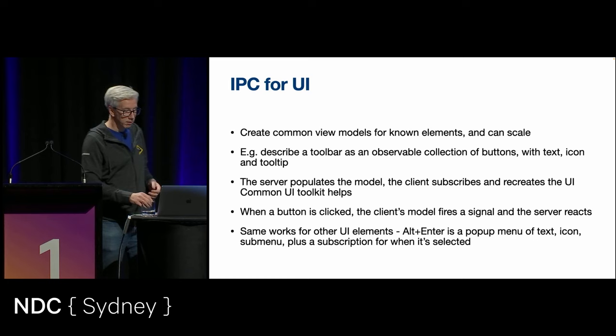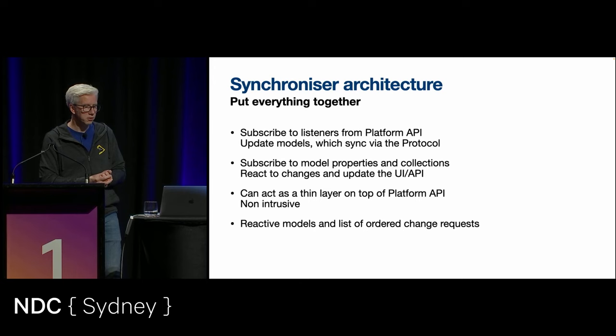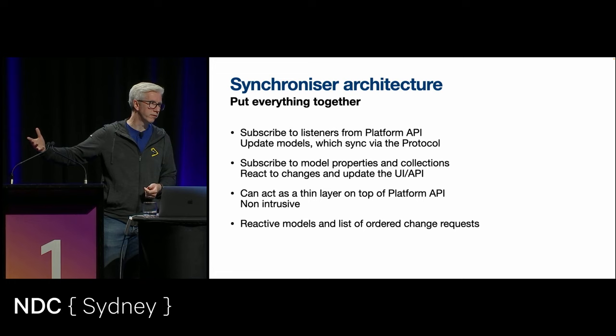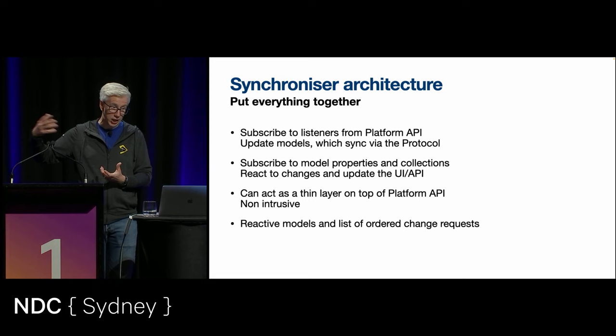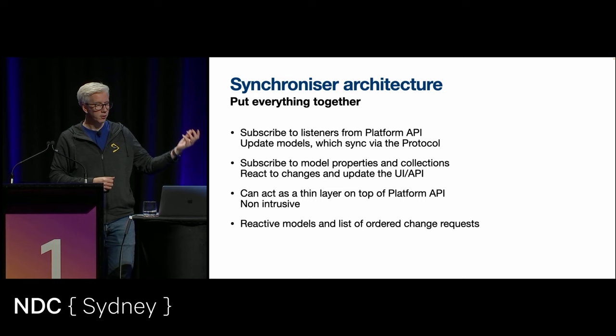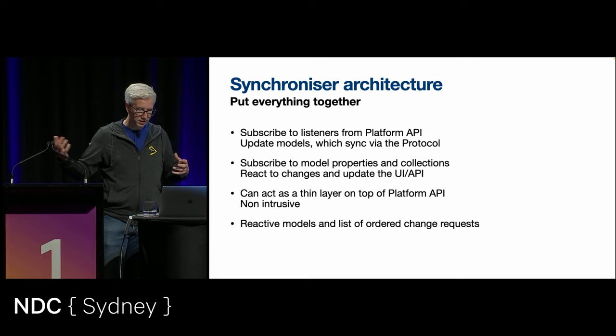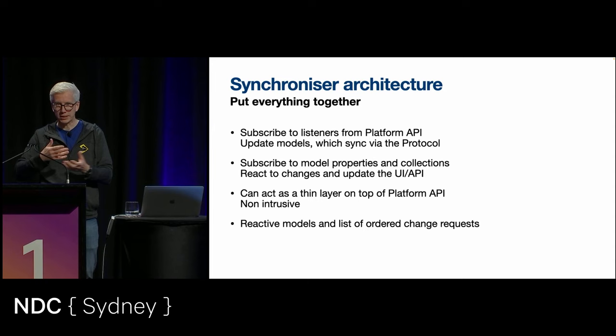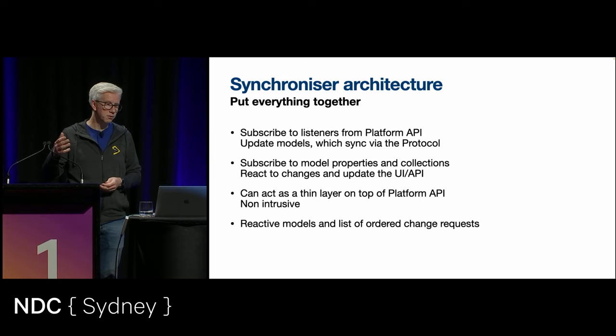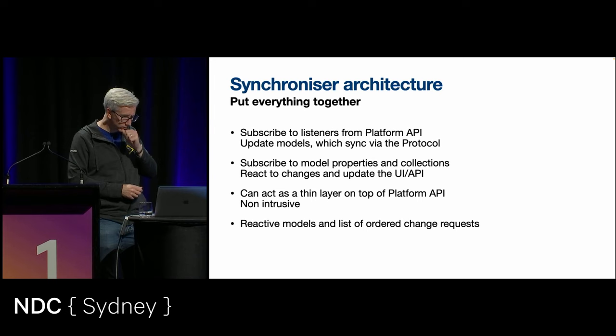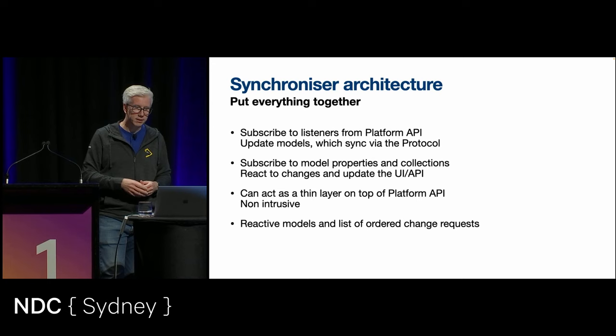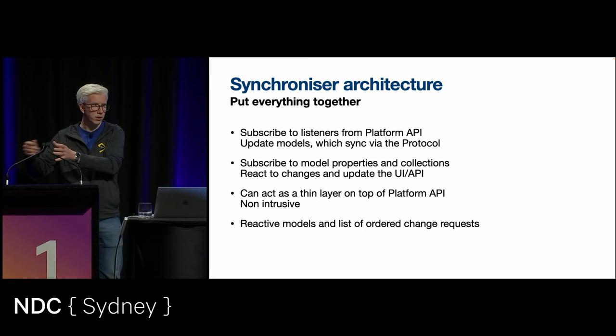To make this work, we create common view models for known elements like toolbars. We describe a toolbar as an observable collection of buttons — text, icon, tooltip — and it scales. Add one in, and we can just display it. The server populates this model, the client subscribes and recreates the UI on the front end. Having a common UI toolkit helps — both back end and front end use IntelliJ, which is Swing-based, so they've got very similar concepts. The way to put everything together is to use this protocol: we subscribe to listeners. If the text caret moves, we notify our observers, that gets pushed onto the protocol, which automatically syncs to the other side, which can react and update the UI.